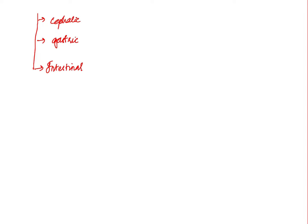In all three phases, regulation is similar to that of gastric juice — either by humoral means through hormones or through nervous regulation. The cephalic phase is mostly nervous regulation, mediated by conditioned or unconditioned reflexes.